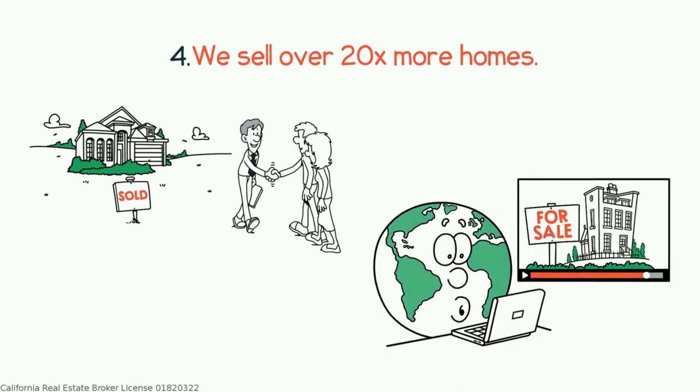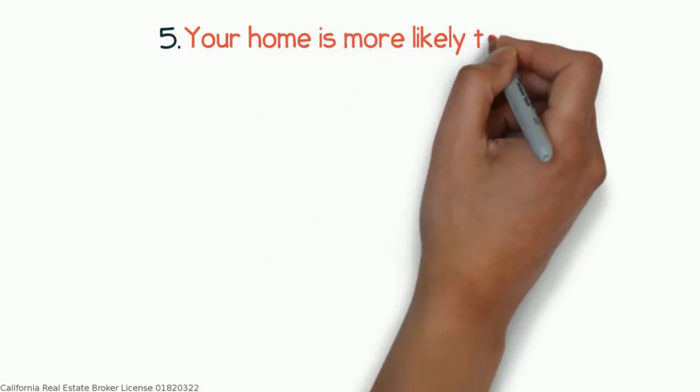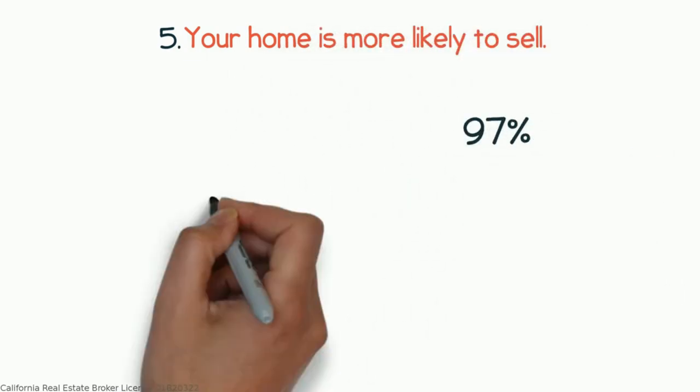Five, with us your home is more likely to sell. 97% of the homes we list sell by the end of the listing term, compared to the 71% industry average.